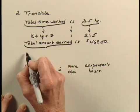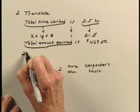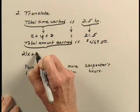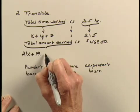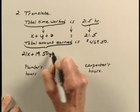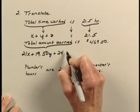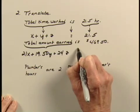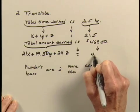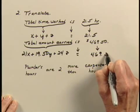So we'll use that to translate here. We have $21 per hour for the electrician, 19.50 times Y for the carpenter, and 24 times Z for the plumber, and that is equal to 469.50.